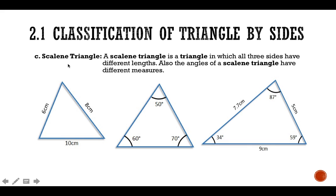Now the scalene triangle. A scalene triangle is a triangle in which all three sides have different lengths — for example, six, eight, ten. Along with that, all the angles are also different from each other.